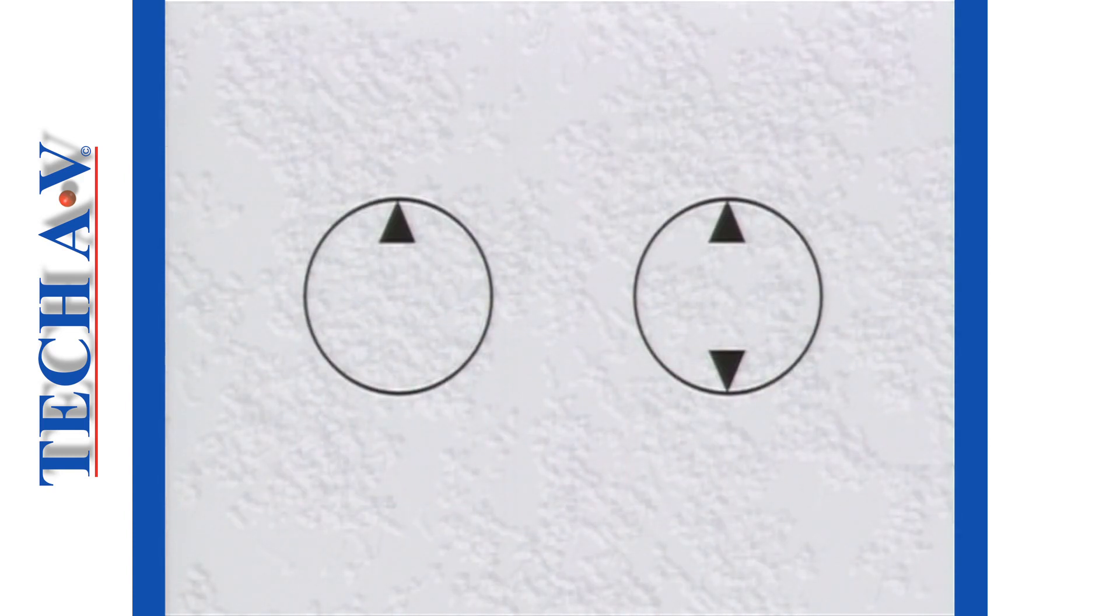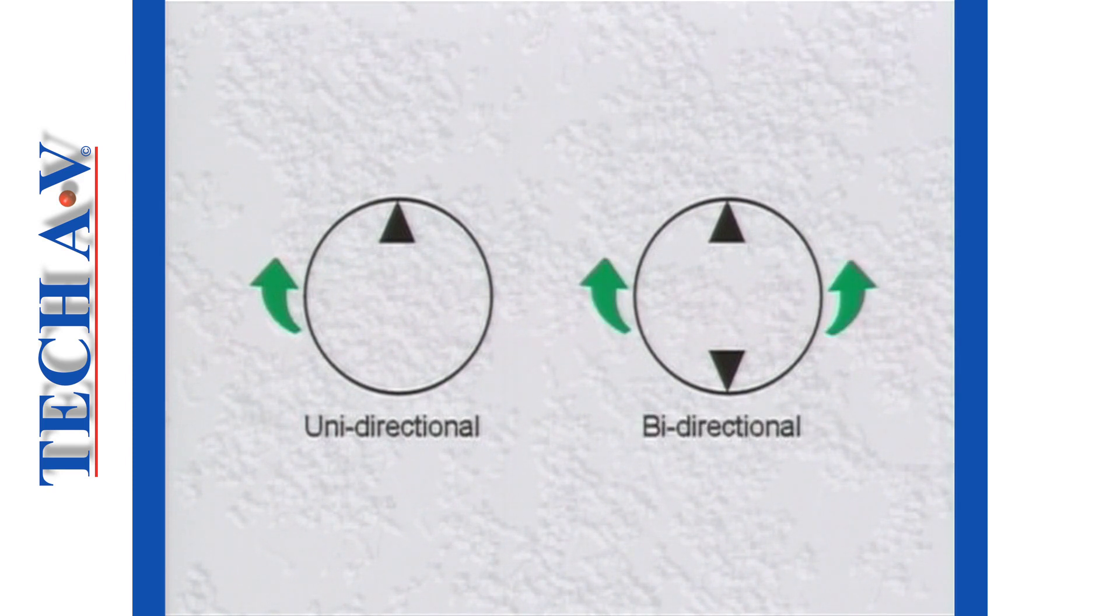We begin with a pump symbol. Pump symbols may contain one or two energy triangles. When there is only one triangle, we interpret this to mean that the pump will operate only in one direction. Two energy triangles indicate that the pump is designed to operate in both directions.